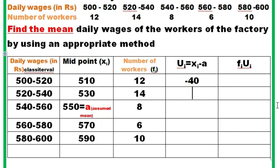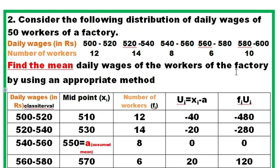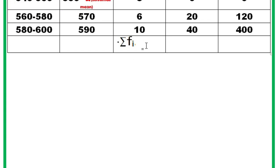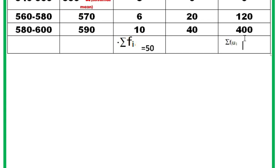Then minus 20, then 0, 20, 40. Then fi*ui, as what we have done in the previous equation, it is fi*xi; here it is fi*ui. 12 into minus 40 is minus 480, 14 into minus 20 is minus 280, then 0, 120, then 400. Number of workers is 50, so total frequency, summation fi, is 50. And the summation fi*ui is minus 240.